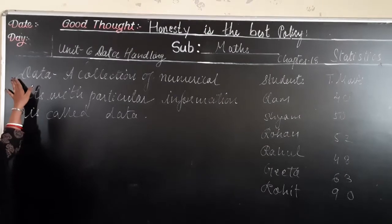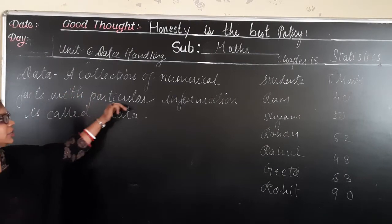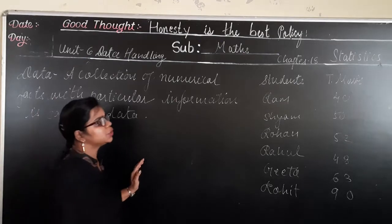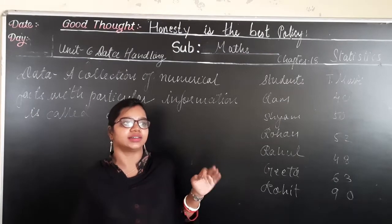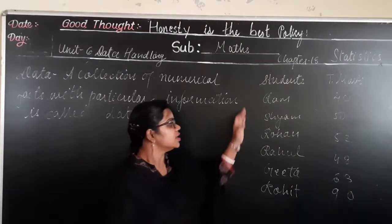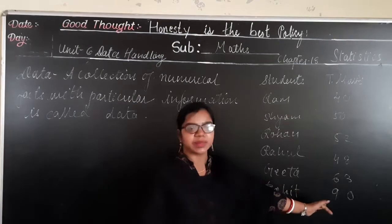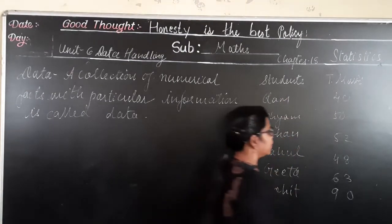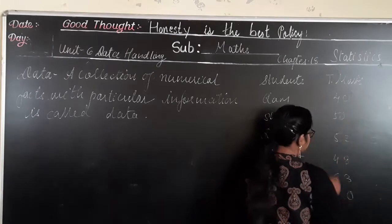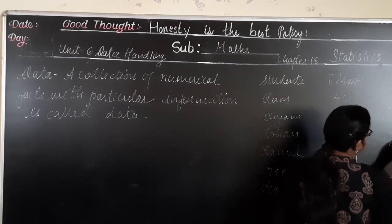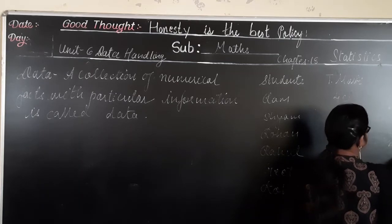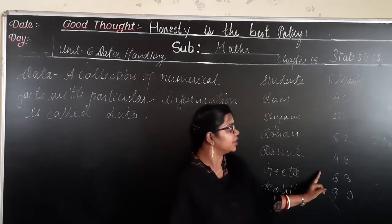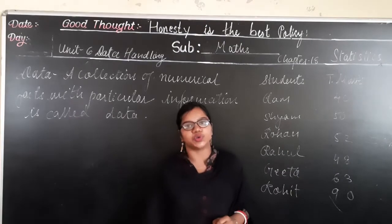Here we will study what is data. Data is a collection of numerical facts with particular information. Suppose you are given the marks of 6 students in mathematics, out of 100 — these 6 students have scored certain marks in the test. This is the data. This is also known as observation. These numerical entries of the data are known as observation, or also called raw data.